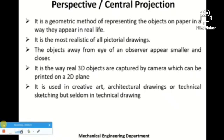The basic difference between perspective projections and the other types of projections we have done so far in this course — like orthographic projection and isometric projection — is that in perspective projection the objects are made in a more real way, having an element of realism in the drawing.